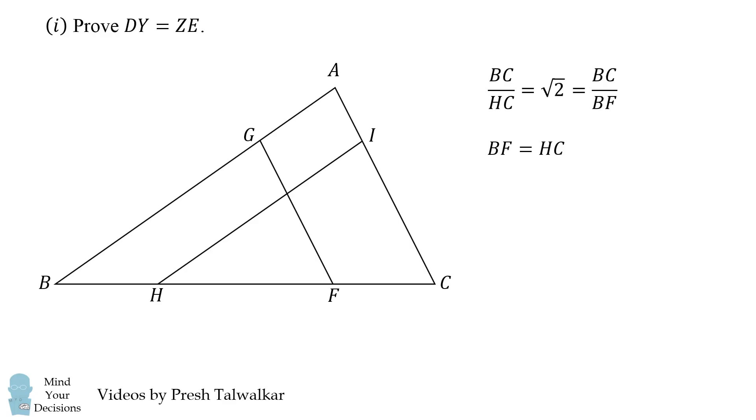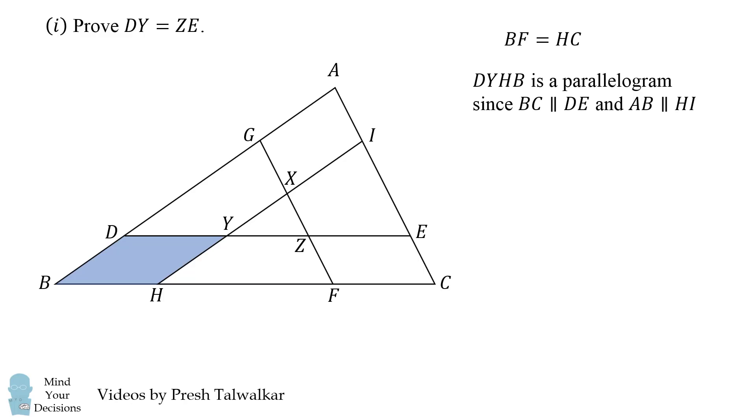Now we're going to go back to our original diagram. The next thing to notice is that this shape DYHB is a parallelogram. That's because the opposite sides are given to be parallel from the given information. We will also have that ZECF is a parallelogram for the same sort of reason.